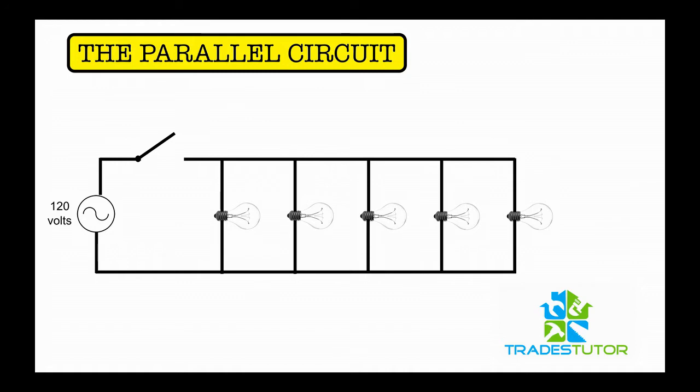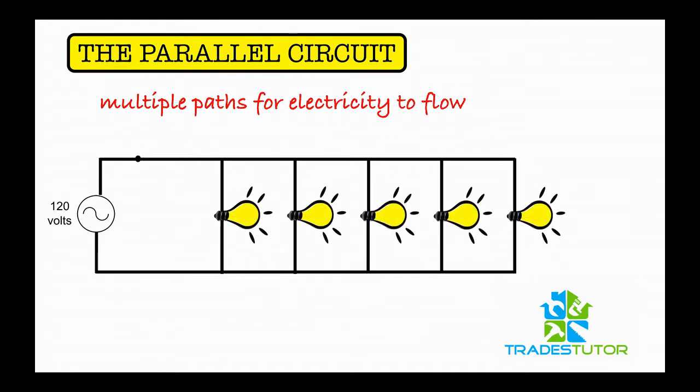Okay, let's get started. The idea with a parallel circuit is you have multiple paths for the electricity to flow. So if I was to close a switch, all five lights would go on. That makes sense. If I was to open it, all five lights would turn off.